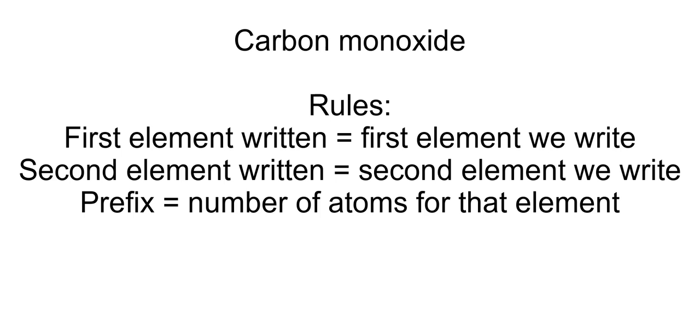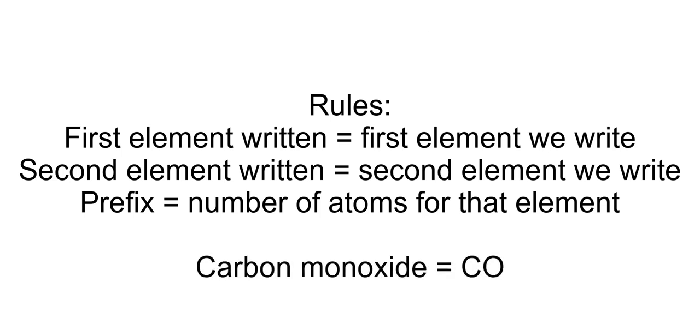When the first element does not have a prefix it is assumed that there is one of them, which means for the name carbon monoxide the formula would be CO.